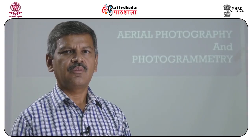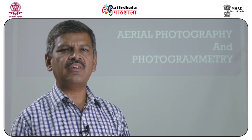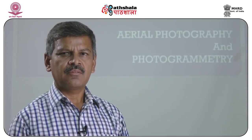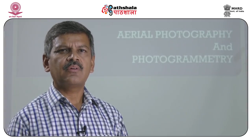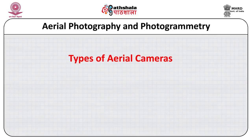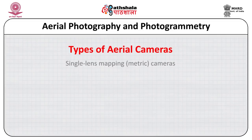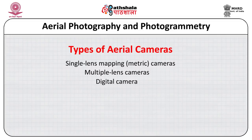For geometrical analysis, vertical air photographs are taken. The aerial camera may be single lens, multiple lens, digital camera, or panoramic. When a single lens is fitted with a camera, it is known as a single lens camera. When more than one lens is fitted with an aerial camera, it is known as a multiple lens camera.